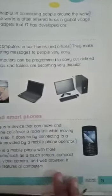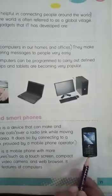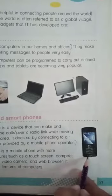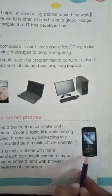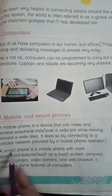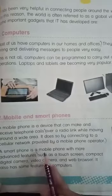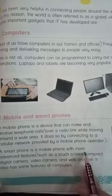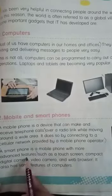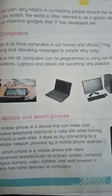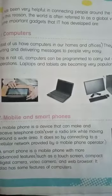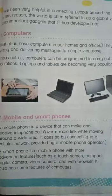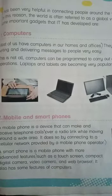Look at the picture. What is this? Mobile. A smartphone is a mobile phone with more advanced features. A simple mobile phone is a simple device.